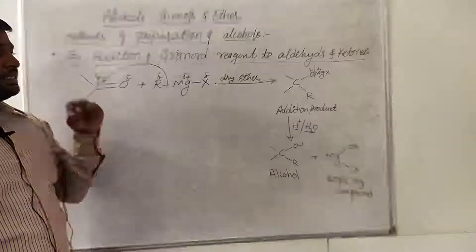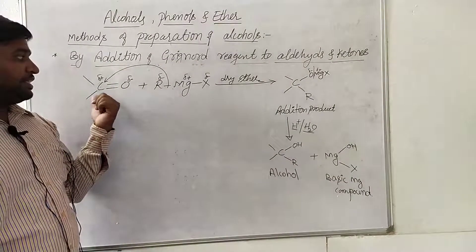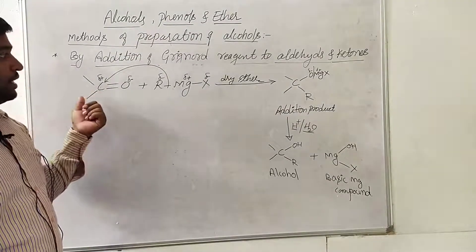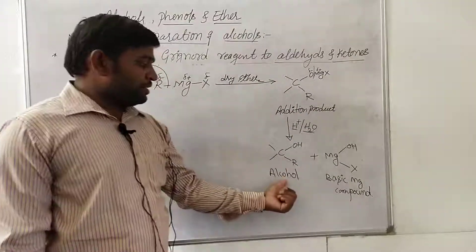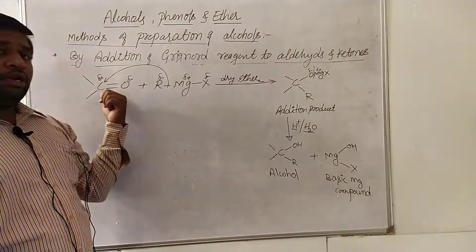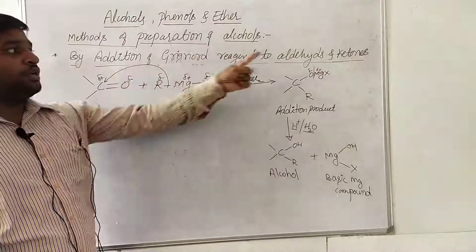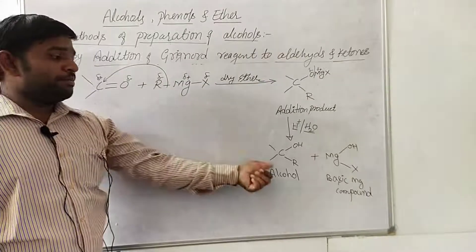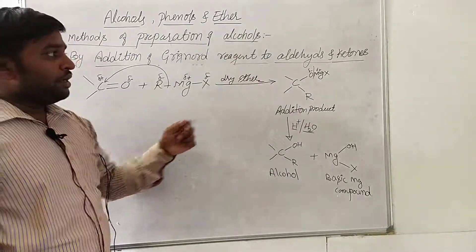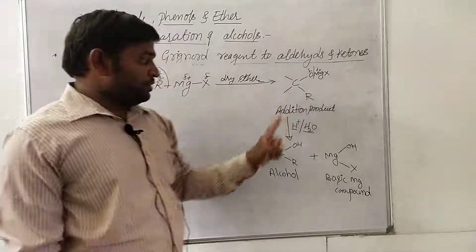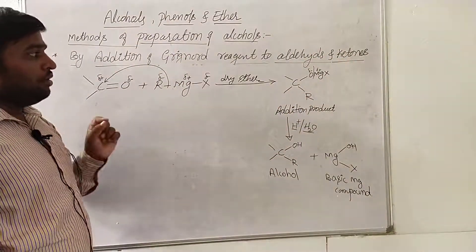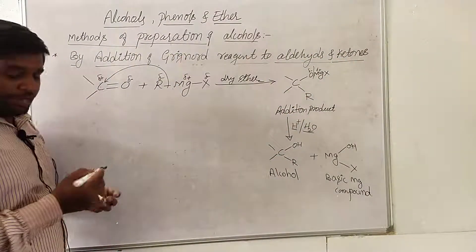This is the general method of preparation of alcohol from any aldehyde or ketone. Let us consider some suitable aldehydes and ketones to bring about corresponding alcohols. By taking corresponding ketones, we can also obtain corresponding alcohols. Now let us take one more example.